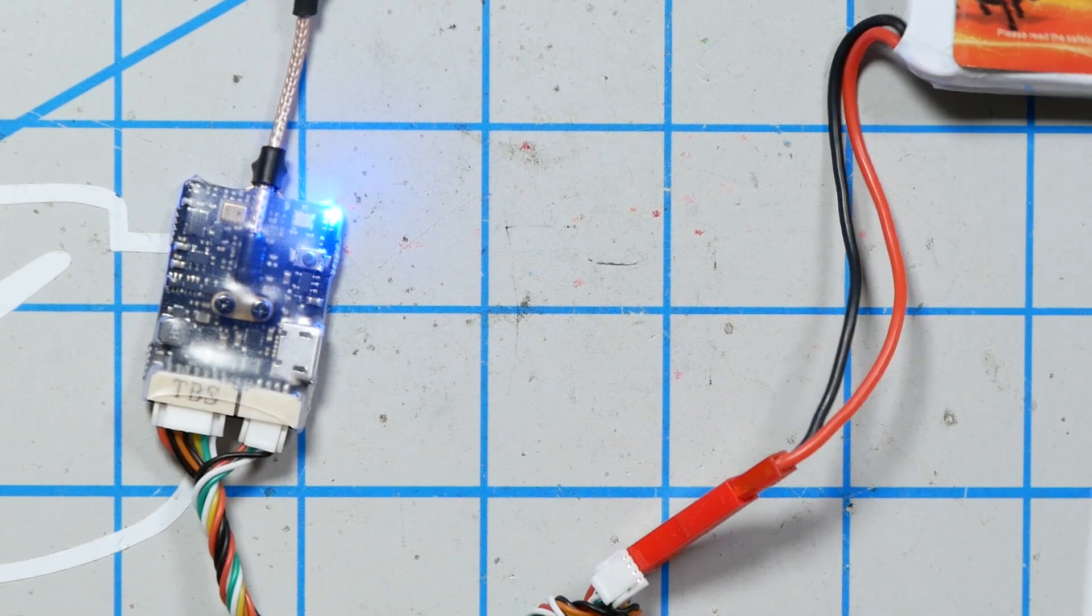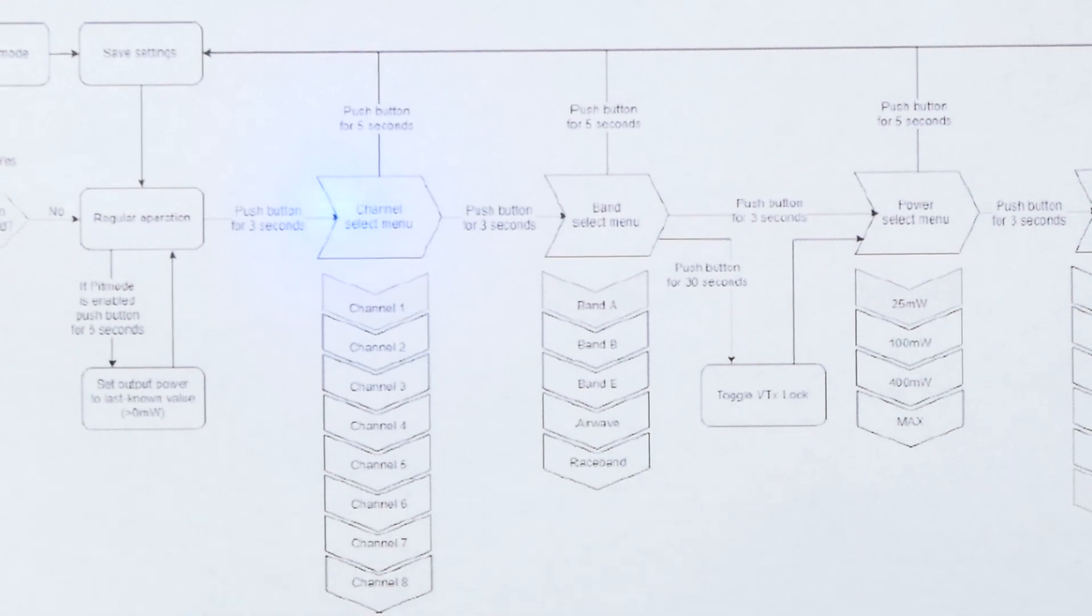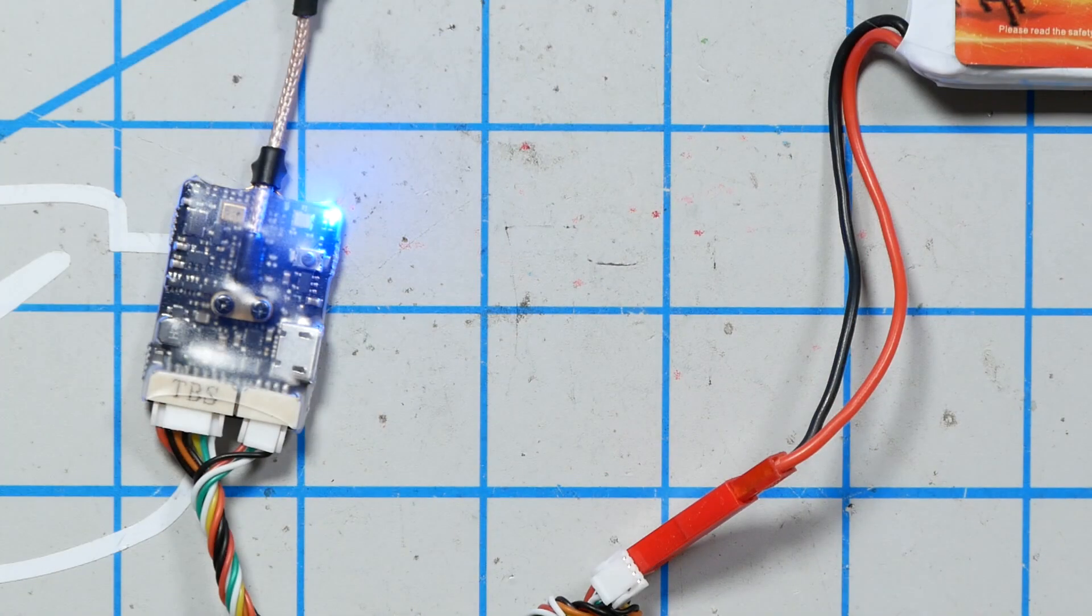All right, this is a TBS Unify Evo and I'm going to follow this flowchart from the manual to unlock it.